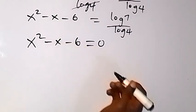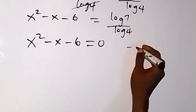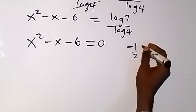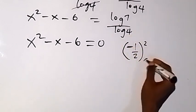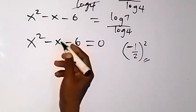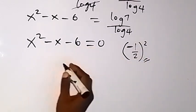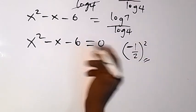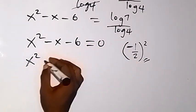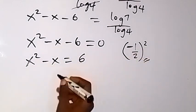The coefficient of x here is minus 1. We take half of that — minus 1 over 2 — then we square it, and we are going to add this to both sides of the equation. Before then, let's separate the constant to that side, so we have x squared minus x equals to 6.